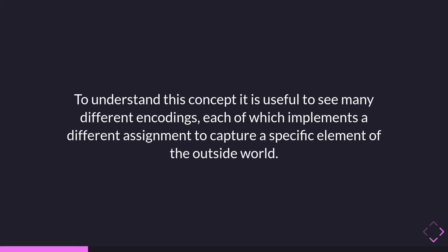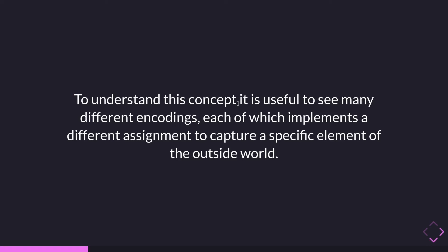To understand encodings well it is important to see many different examples, each implementing a different assignment capturing a different aspect of the real world. We have an encoding for characters, for colors, for numbers, for fonts. Any concept with its own reality can have its own encoding. For example, PNG and JPEG are encodings for images, and they are actually based on other encodings like RGBA — encodings build on top of other encodings.